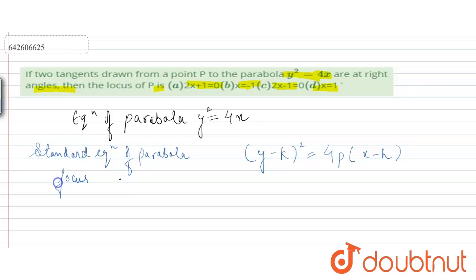So, focus is h plus p comma k, and directrix is x equals h minus p.